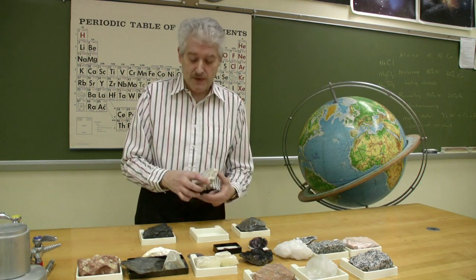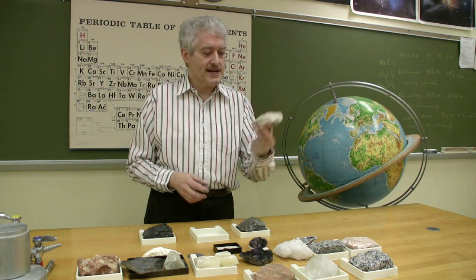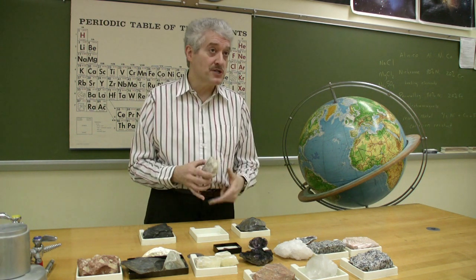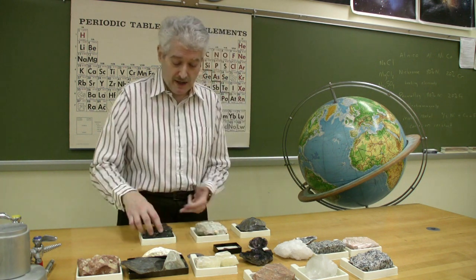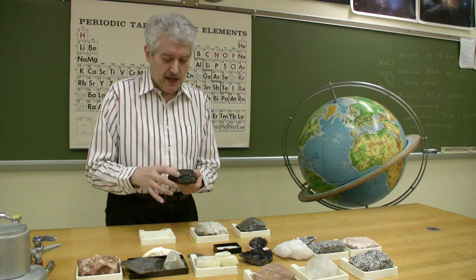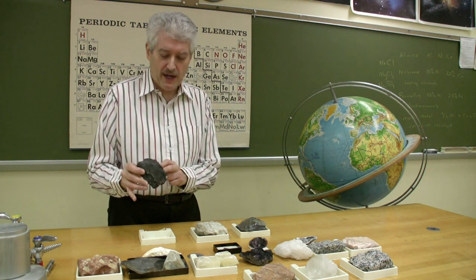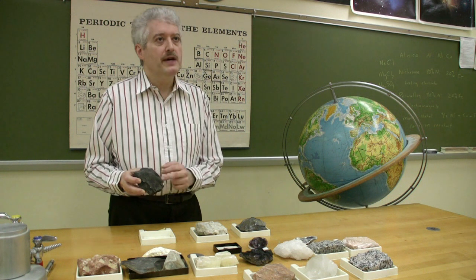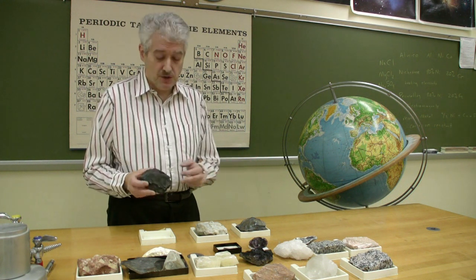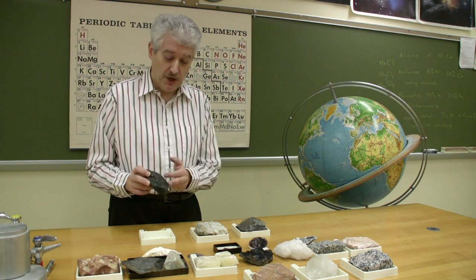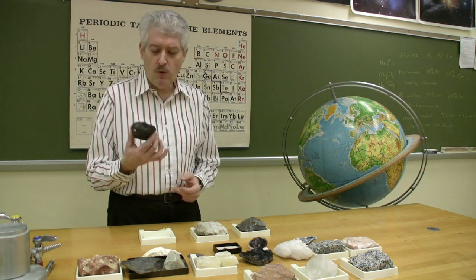Basalt also contains feldspar, which is light in color, but there's not enough of that present generally to give you lightness in the mineral. And by definition, if we look at a piece of basalt, it's typically going to be over three quarters dark material, so it's got a very dark color.